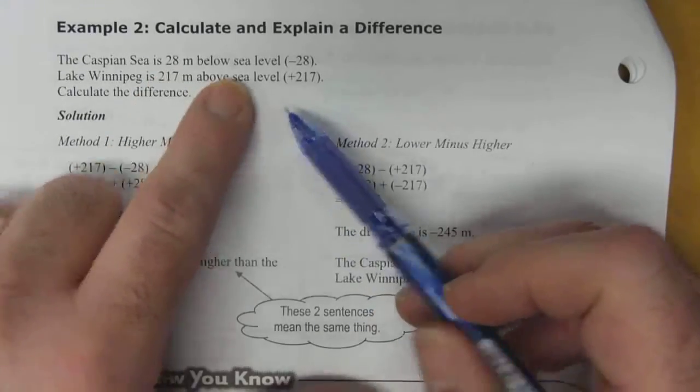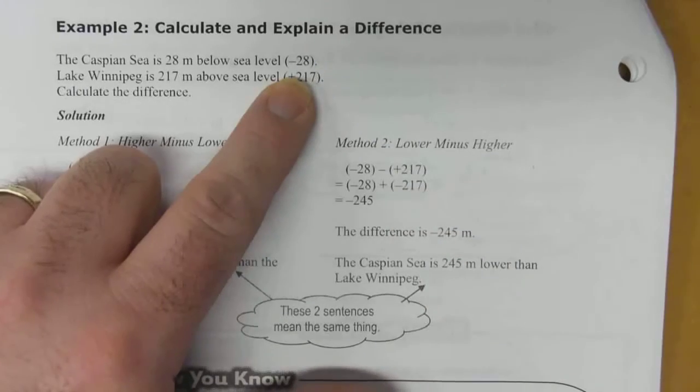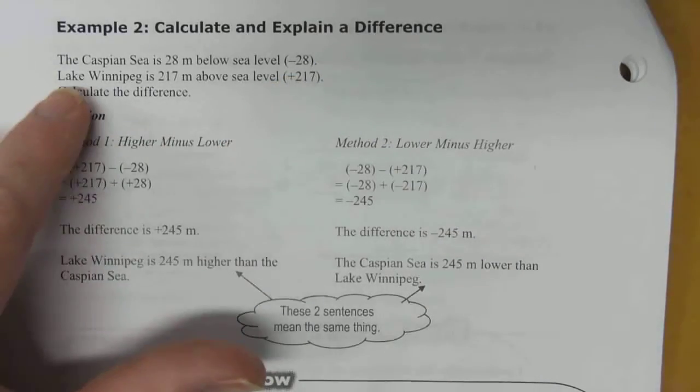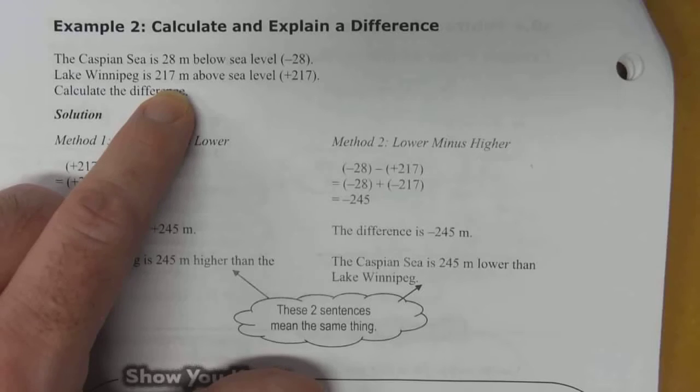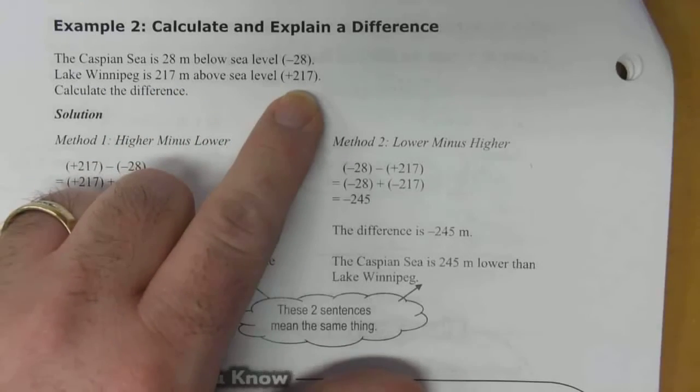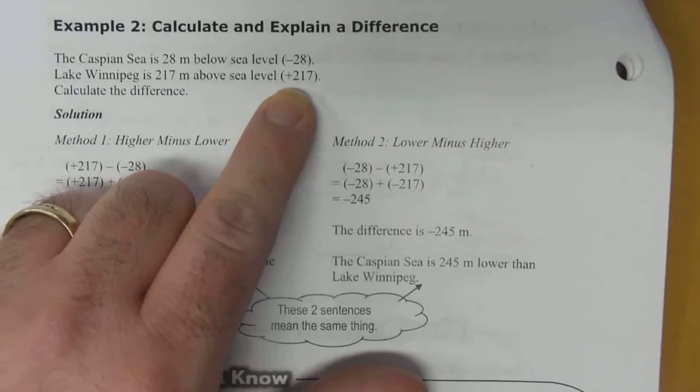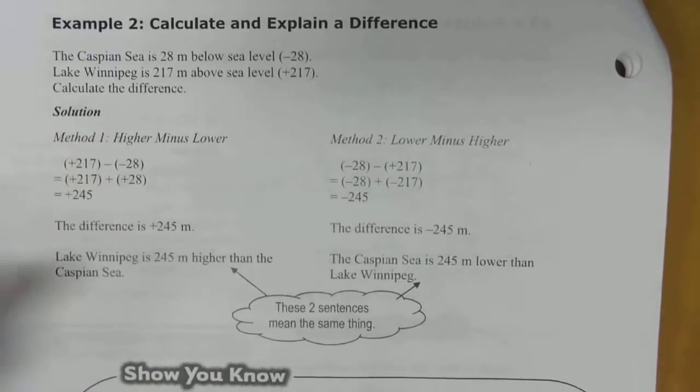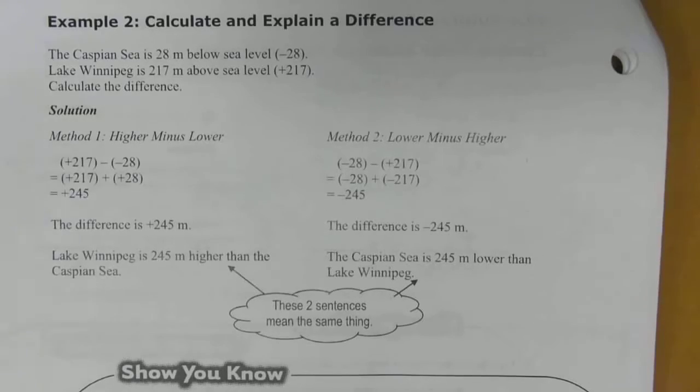So 28 meters below sea level, we're going to reference that as negative 28. Lake Winnipeg is 217 meters above sea level. So that's above sea level, so we're going to say that one's positive. Calculate the difference. So we have two numbers, we just need to subtract them.